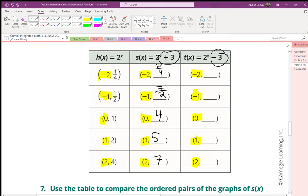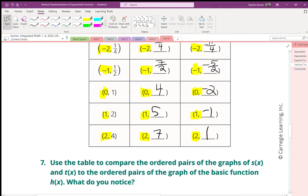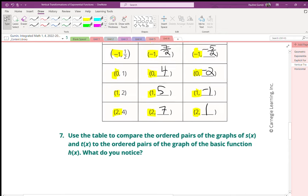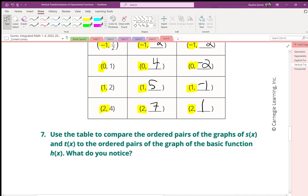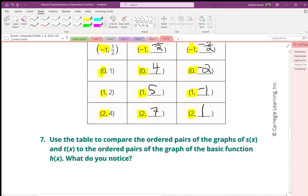Now let's subtract 3 from t of x. 1/4 minus 3 is negative 11 over 4. 1/2 minus 3 is negative 5 over 2. Then 1 minus 3, 2 minus 3, and 4 minus 3. Perfect. When we're using the table, we can quite literally see the graphs being made larger and smaller by 3.